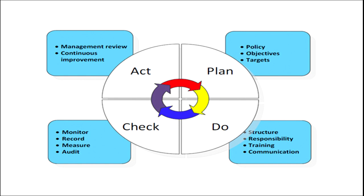The Check block also has four components: monitor the working, record all steps of functioning, measure the extent of success achieved, and audit the whole process and performance. The Act block has two components: management review — an overview of the whole process — and continuous improvement by understanding the loopholes left in the first cycle. In this way, the last block is the connecting link to the next management cycle.